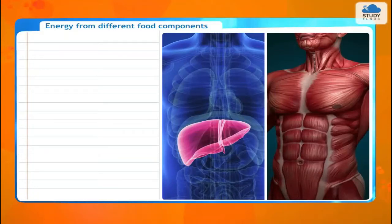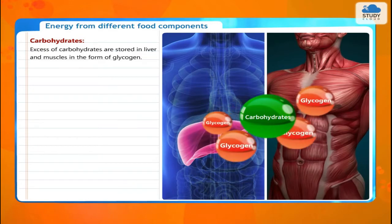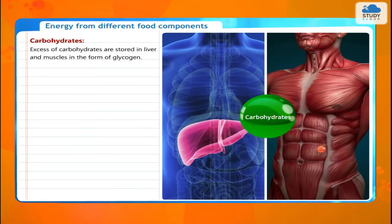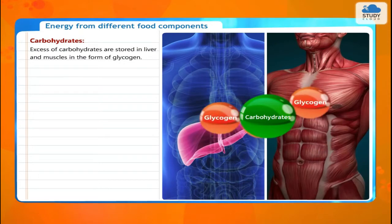Energy from different food components. Carbohydrates: excessive carbohydrates are stored in the liver and muscles in the form of glycogen.